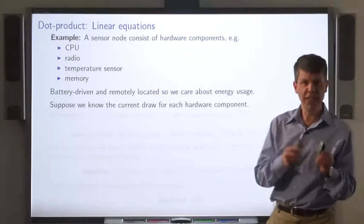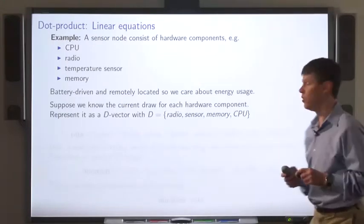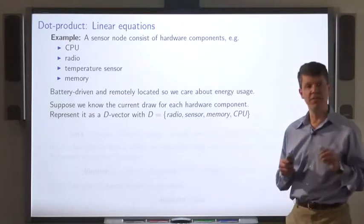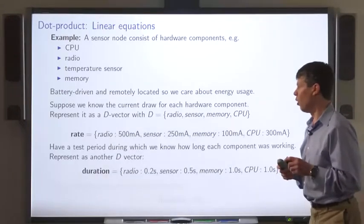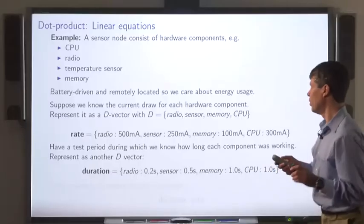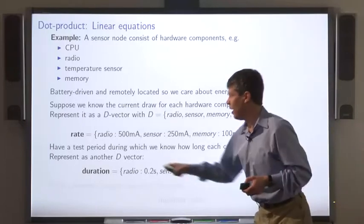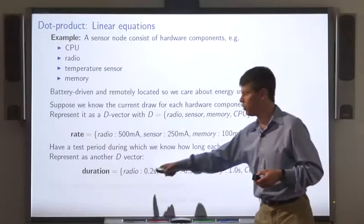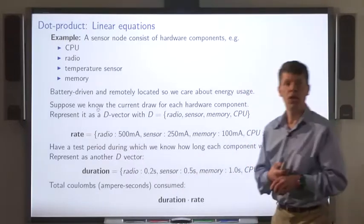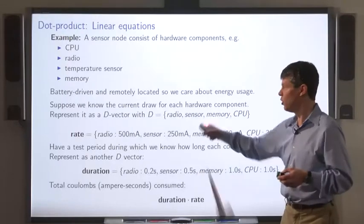Now suppose we know for each of these four hardware components how much energy it draws. We'll represent that as a vector. The domain of the vector will be the labels of the individual hardware components. Here's an example of such a vector. It maps the radio to the amount of current that the radio takes when it's on, the sensor to the amount of current that the sensor takes when it's on, and so on. Let's say we have a test period during which we know how long each hardware component is on. The total amount of energy consumed during the test period can be expressed as the dot product of the duration vector with the rate vector.